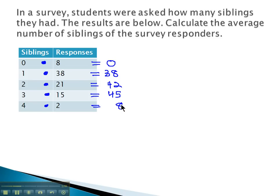So to calculate the total number of siblings, we must add these new values we just found. 38 plus 42 plus 45 plus 8 is 133.